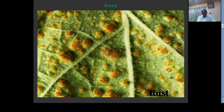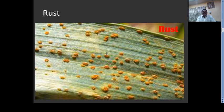Now we will look at certain images. This is rust — see, this is an orange pustule raised from the surface of the leaf. These are the rust which causes a serious disease to wheat called stem rust of wheat. In this disease, two stages are produced by the fungus.